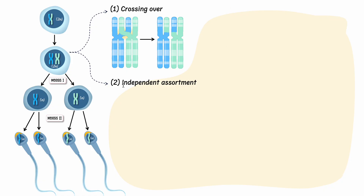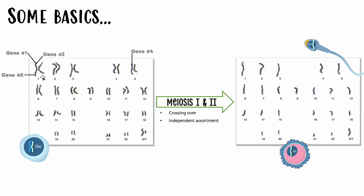Independent assortment also happens during meiosis 1. To explain independent assortment, we're going to have to use two chromosome pairs — for crossing over we only needed one pair, but for independent assortment to make sense we need two. We're going to use chromosome pair 1 and chromosome pair 5.